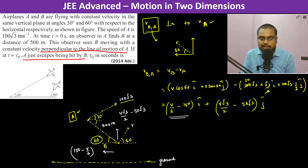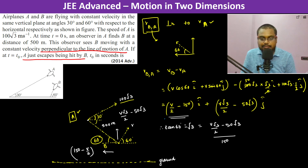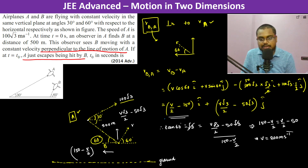So it is going to be 60 degrees. Therefore, tan 60 degrees is going to be root 3, which is equal to V root 3 by 2 minus 50 root 3 divided by 150 minus V by 2. So root 3 and root 3 cancel out. So 150 minus V by 2 is equal to V by 2 minus 50. So therefore V becomes 200 meter per second.